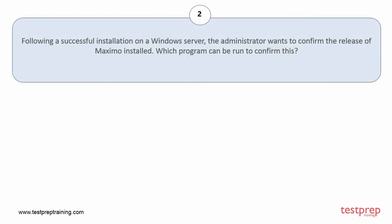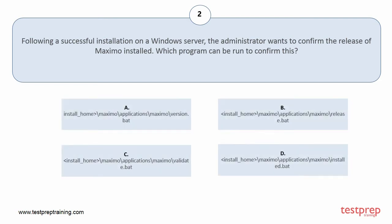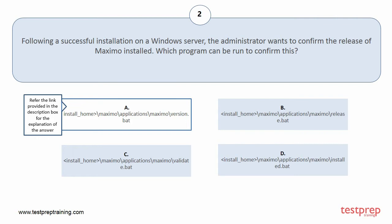Question number 2. Following a successful installation on a Windows server, the administrator wants to confirm the release of Maximo installed. Which program can be run to confirm this? The correct answer is option A.